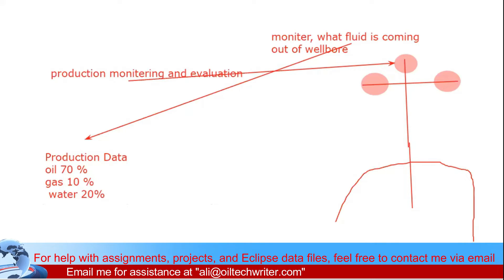One of the jobs of the production engineer is to monitor this data. You will be given a job at an oil and gas field, sit in front of a computer with two technicians, and look after 15 to 20 wells. Every 12 hours they make a report: this much oil came out, this much gas, this much water. This data is sent to the head office every 12 hours. It's the least risky job — salaries are lower but very comfortable.